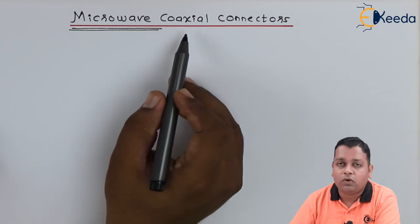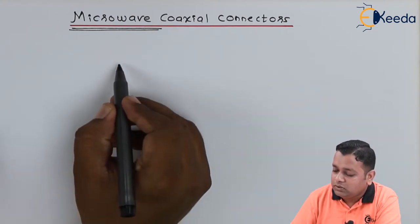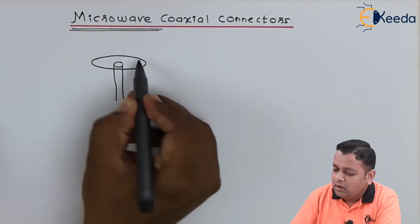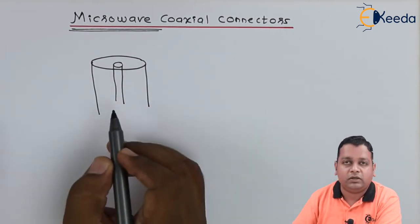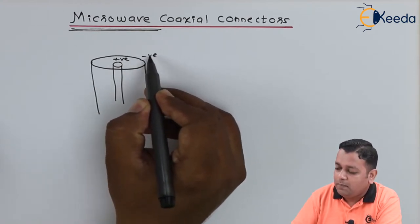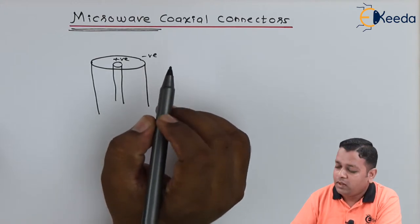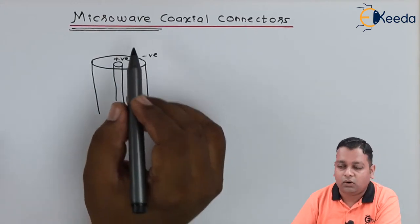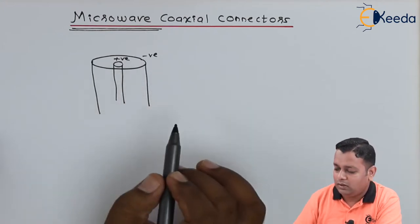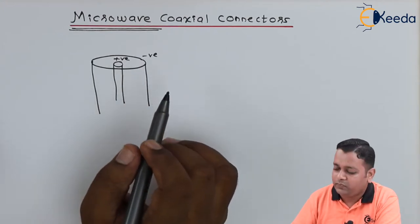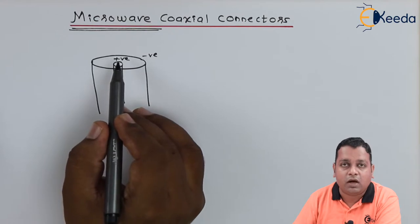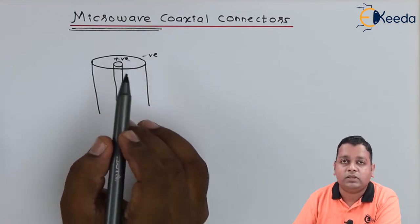If you talk about the coaxial transmission line, it usually has the structure of a central core surrounded by another conductive material. The central core is at a more positive potential whereas the surrounding conductor is at a comparatively negative potential. The microwave travels from one end of this coaxial transmission line to another. The radius of the central conductor and the surrounding conductor are expected to have uniformity throughout the length of this transmission line.